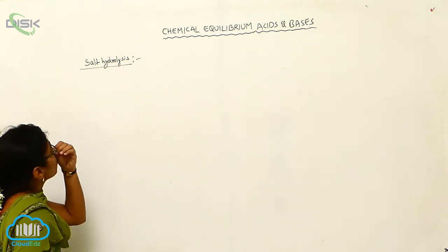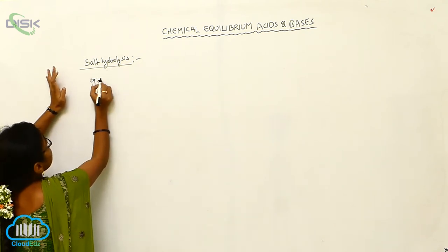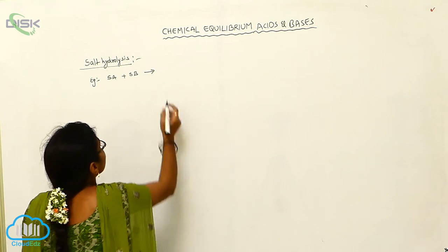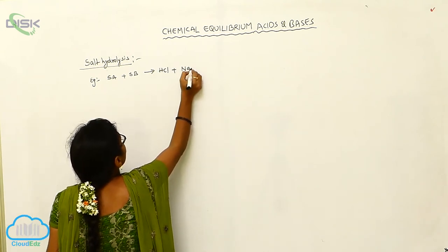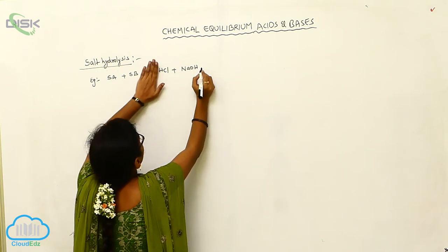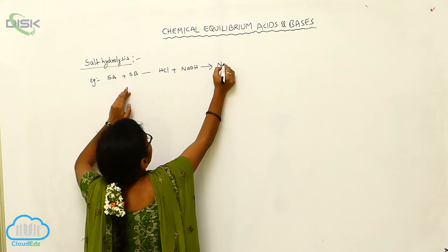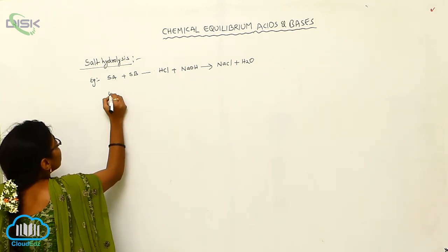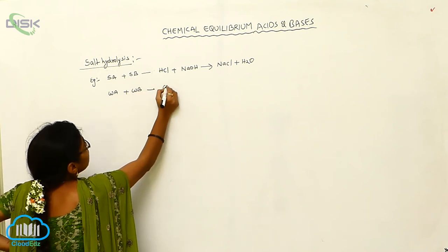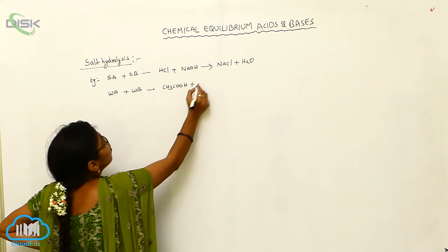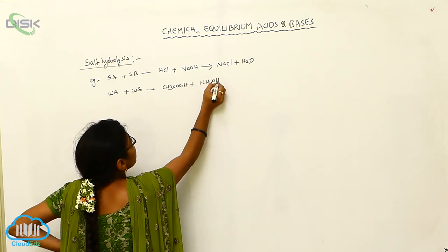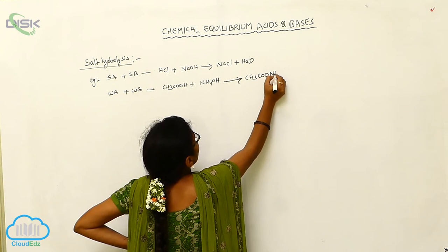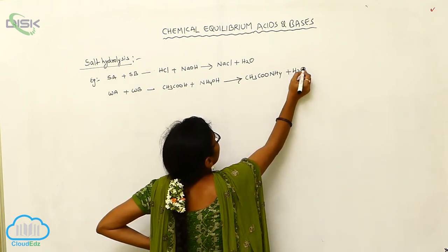There are several types of salt formation. First, the combination of a strong acid and a strong base: for example, HCl plus NaOH gives NaCl plus H₂O. Next, weak acid plus weak base: acetic acid CH₃COOH plus ammonium hydroxide gives ammonium acetate CH₃COONH₄ plus water.